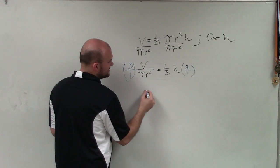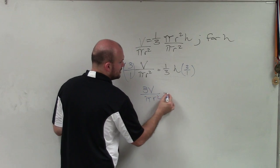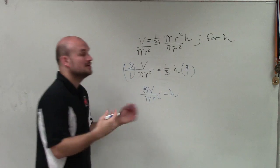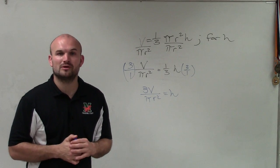So my final equation is 3v divided by pi r squared equals h. So there you go, ladies and gentlemen. That is how you solve for h in the volume formula. Thanks.